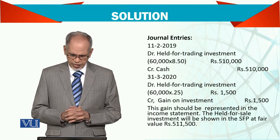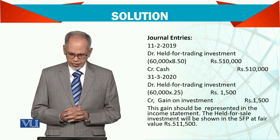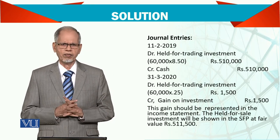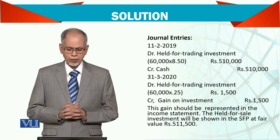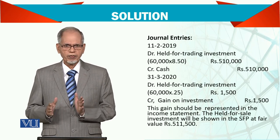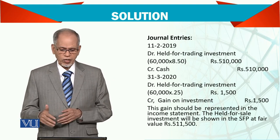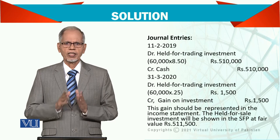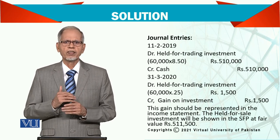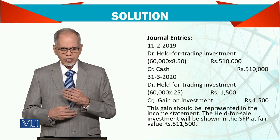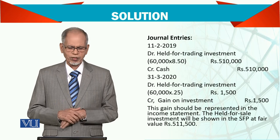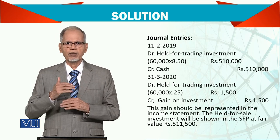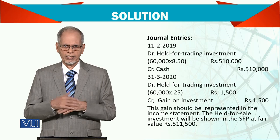The held-for-trading investment will be shown in the statement of financial position at a fair value of 5,11,500. If you multiply 60,000 by 8.75, you get this figure. Add 1,500 to 5,10,000 and you get 5,11,500. The change in fair value goes through the investment account, and that change flows through the profit and loss account. On the balance sheet — i.e., in the statement of financial position — the figure shown will be the new adjusted figure reflecting the price movement. Thank you very much.